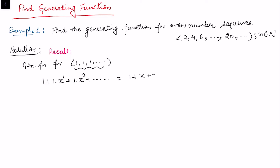This series 1 + x + x² + ... is simply 1/(1 - x). Now if we take the derivative on both sides, taking the derivative on both sides, what do we get?